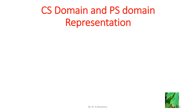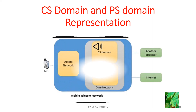CS domain and PS domain representation is shown below. The mobile station is connected to the access network, which connects to the core network comprising two domains: the PS domain (packet switched domain) and the CS domain (circuit switched domain). The PS domain is responsible for internet purposes, while the CS domain handles voice-oriented circuit switched network services.